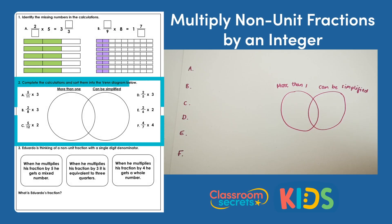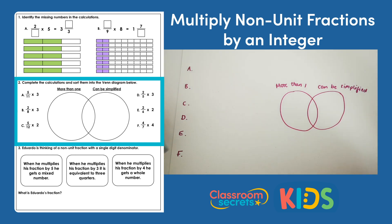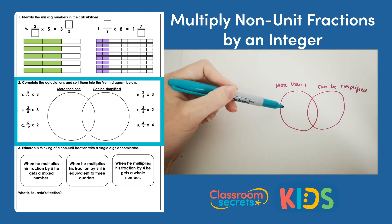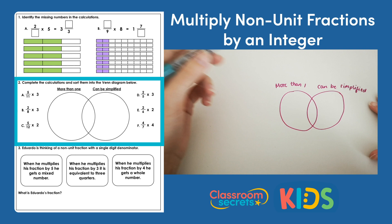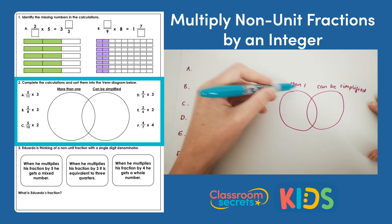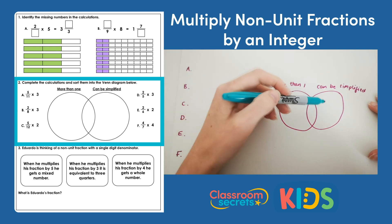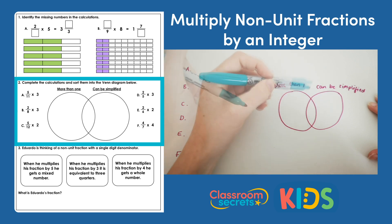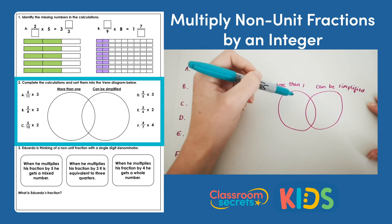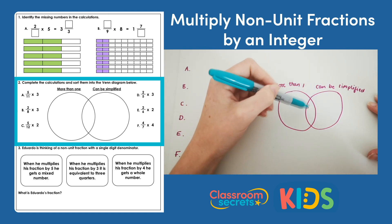Question 2: complete the calculations and sort them into the Venn diagram below. We need to solve calculations a through to f and place them in the correct part of the Venn diagram. Answers that are more than 1 go in one section, answers where the fraction can be simplified go in another section, and answers that meet both criteria go in the middle.